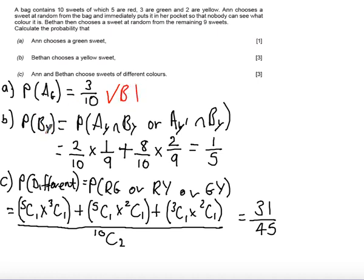Then probability that Beth chooses a yellow, we get a method mark and an accuracy mark for the correct calculation. So this idea of looking at the two different possible ways that Beth could choose a yellow. And we get an answer mark for getting a final answer of 1 fifth.